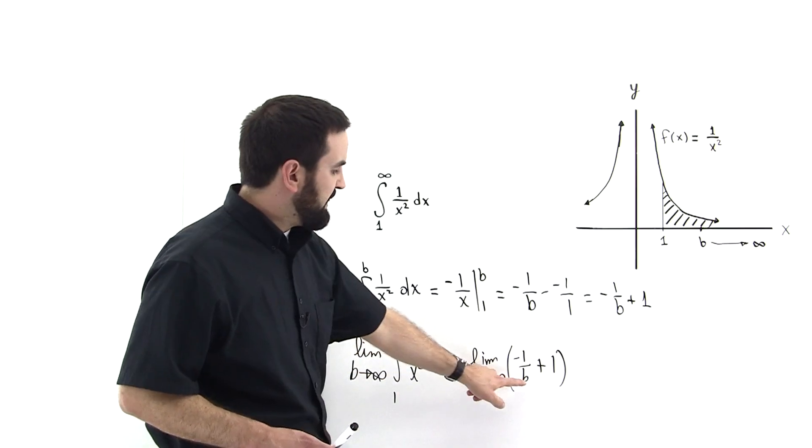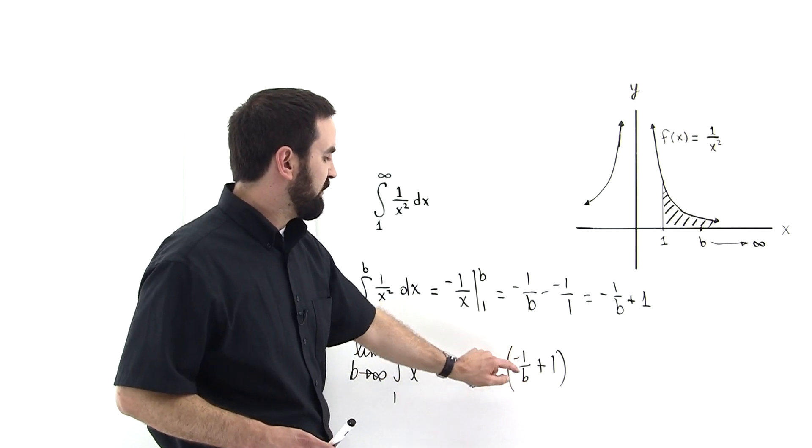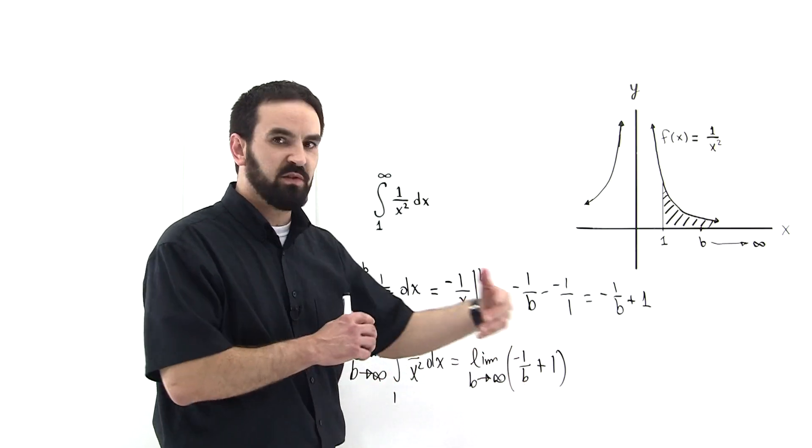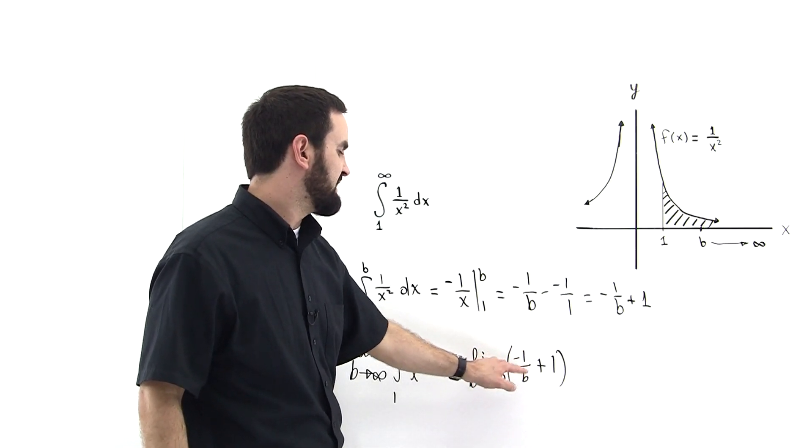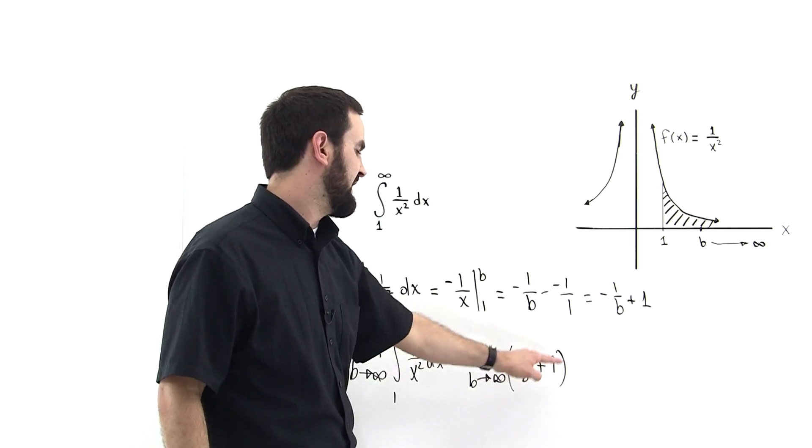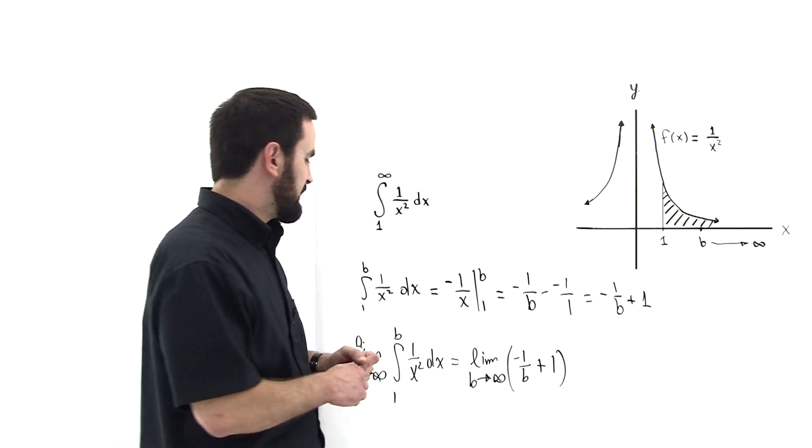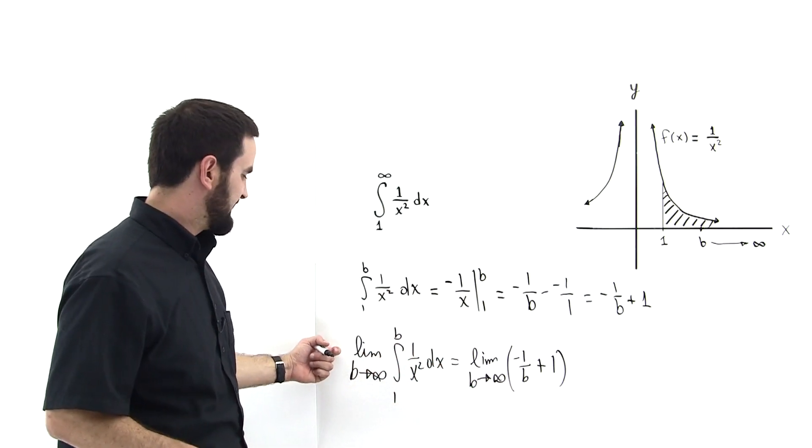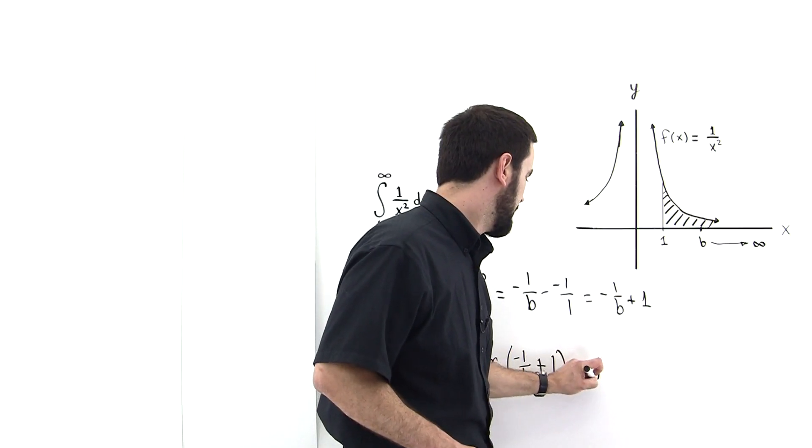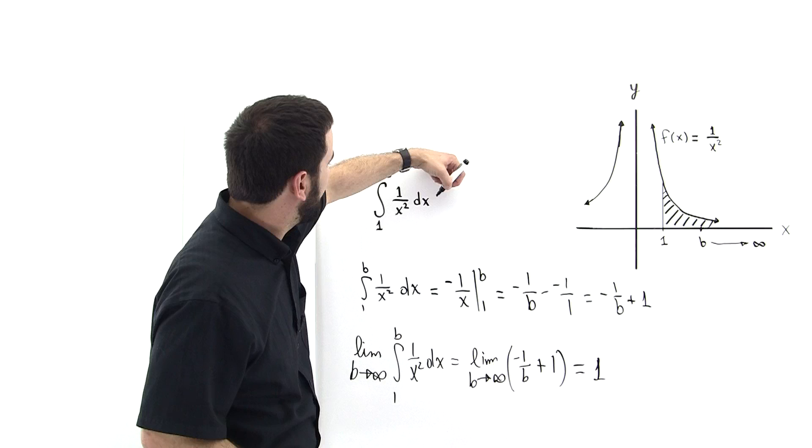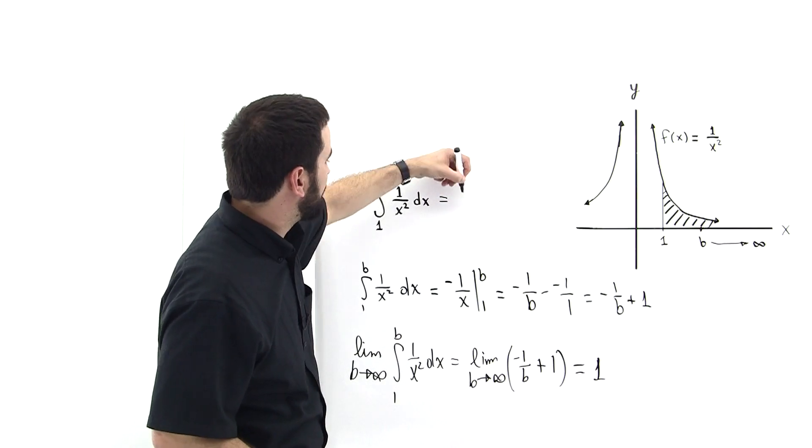Well, when b is infinite, the limit of -1/b as b goes to infinity—if this number is really big, then this quantity is 0 and the entire quantity is 1. So this limit does exist, it is finite, and the number is 1. So this is equal to 1.